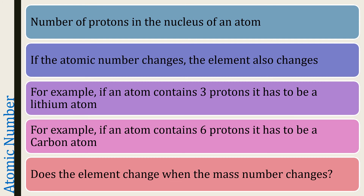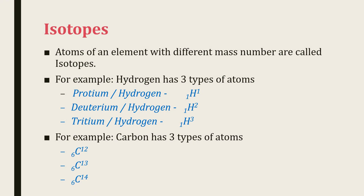Does the element change when the mass number changes? If one proton is present in the atom, it has to be a hydrogen atom. Observe the mass numbers of each hydrogen atom — they are not the same. So, atoms of an element with different mass numbers are called isotopes. For example, hydrogen has 3 isotopes: protium with mass number 1, deuterium with mass number 2, and tritium with mass number 3. Another example: if 6 protons are present in the atom, it has to be a carbon atom. Carbon has 3 isotopes: carbon-12, carbon-13, and carbon-14.